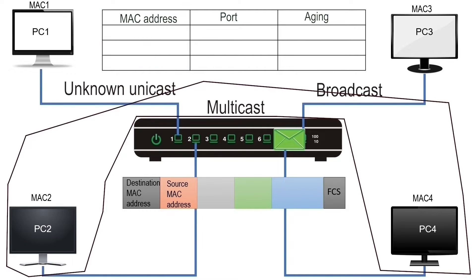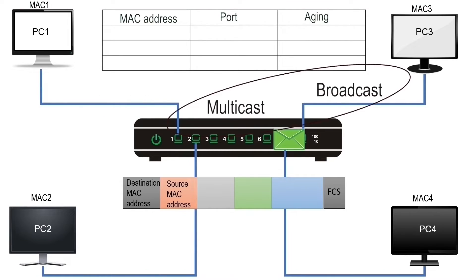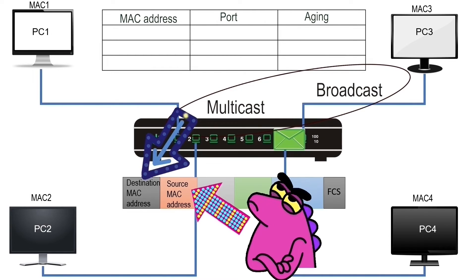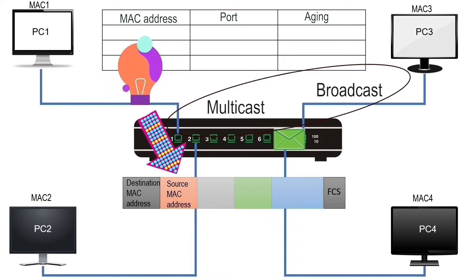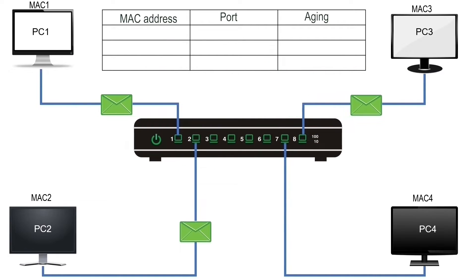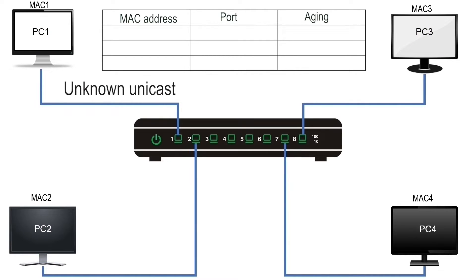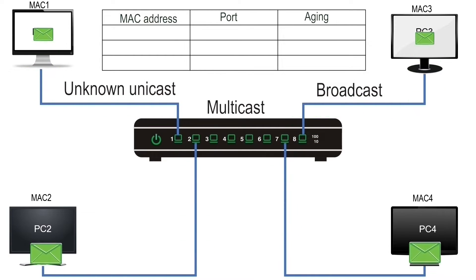A multicast address belongs to a group of devices; a broadcast address belongs to all devices on the local network. Multicast and broadcast are destination-only addresses — they are never used in the source address field of a frame. Since a switch uses the frame's source field to learn addresses, it never learns multicast or broadcast addresses. These addresses always remain unknown to the switch, so a switch always floods a frame having an unknown unicast, multicast, or broadcast address in the destination field.